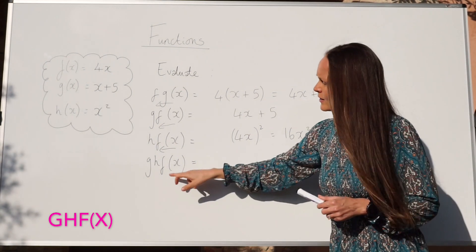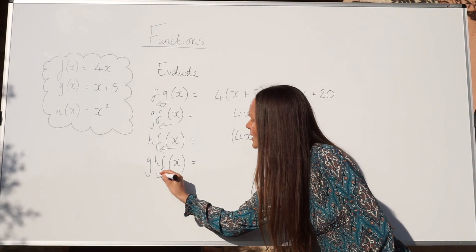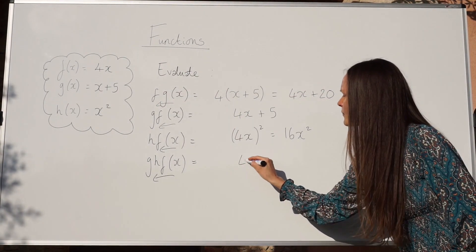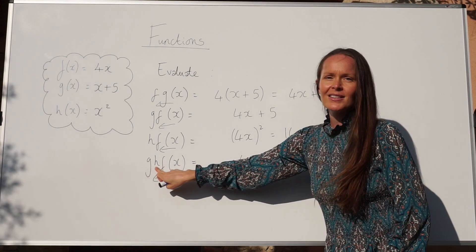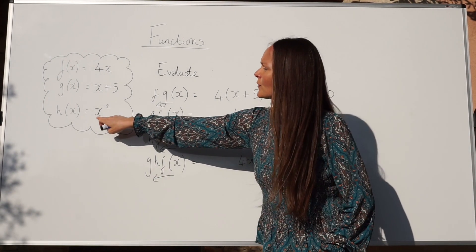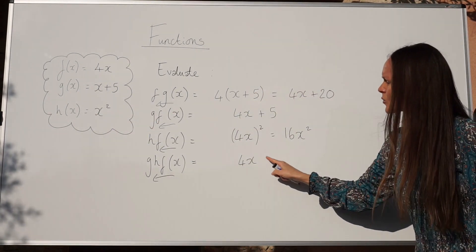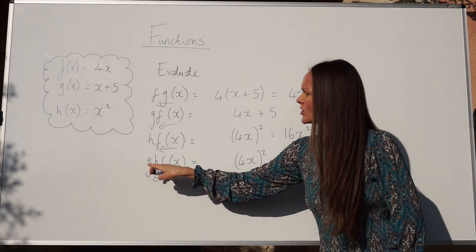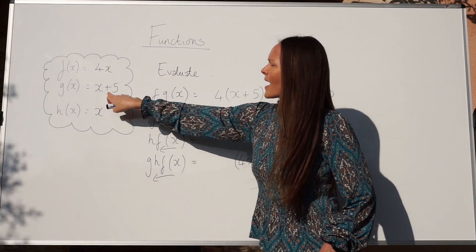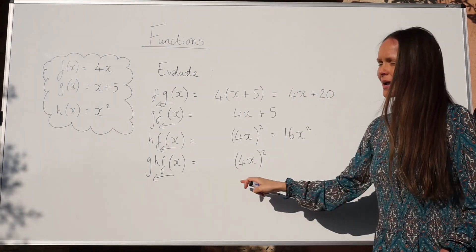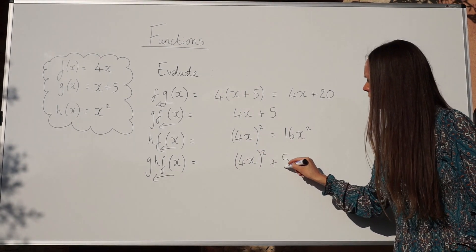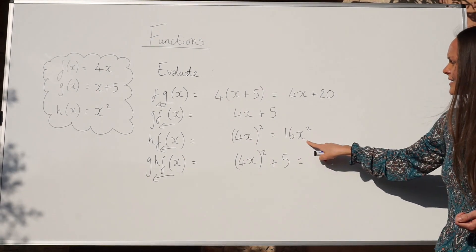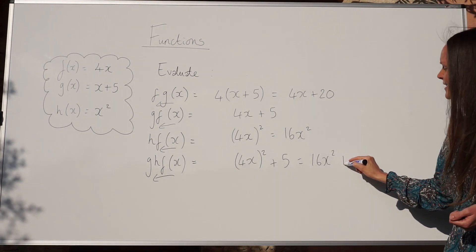This time we've got three functions to deal with. Start with the one written last — f of x — which is 4x. Then look at h of x: you square it, giving 4x all squared. Then look at g of x: you add 5. Simplifying, 4x all squared is 16x squared, and then don't forget to add 5. So the final answer is 16x squared plus 5.